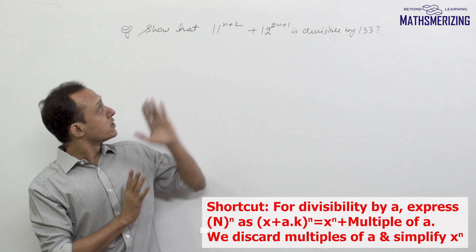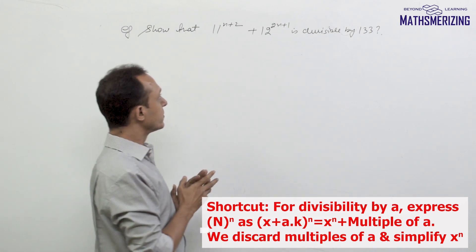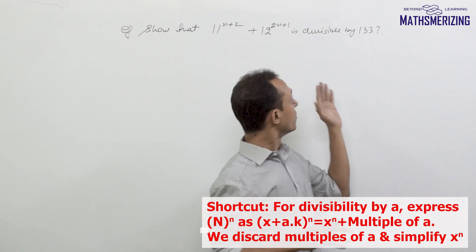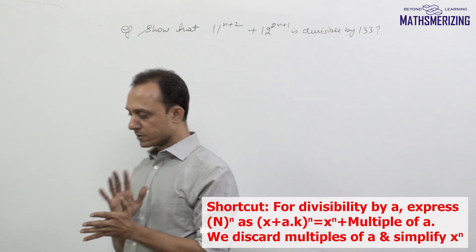Let us take up another question, which is to show that 11^(n+2) + 12^(2n+1) is divisible by 133. We are going to solve it using a shortcut.